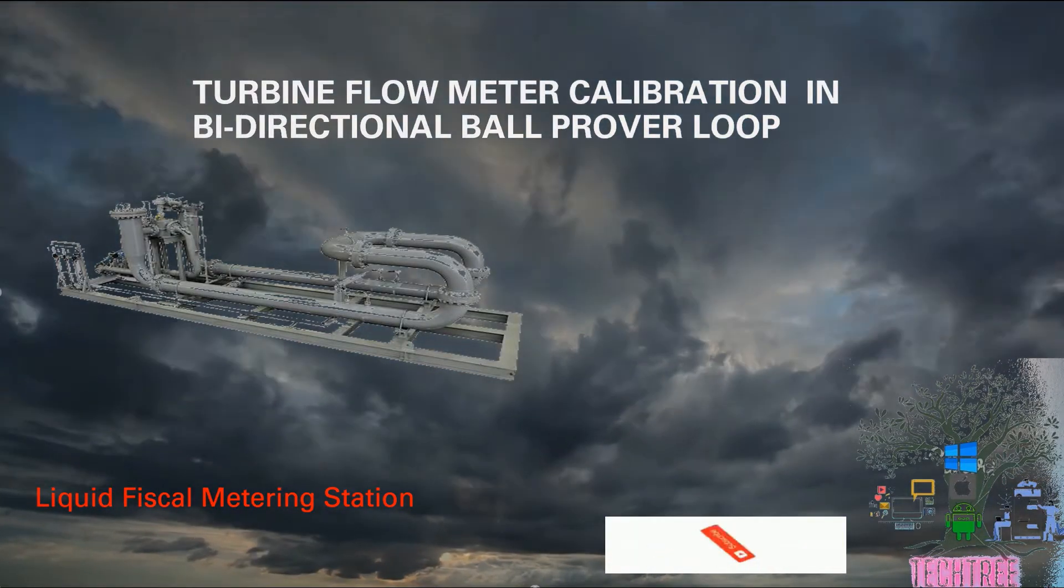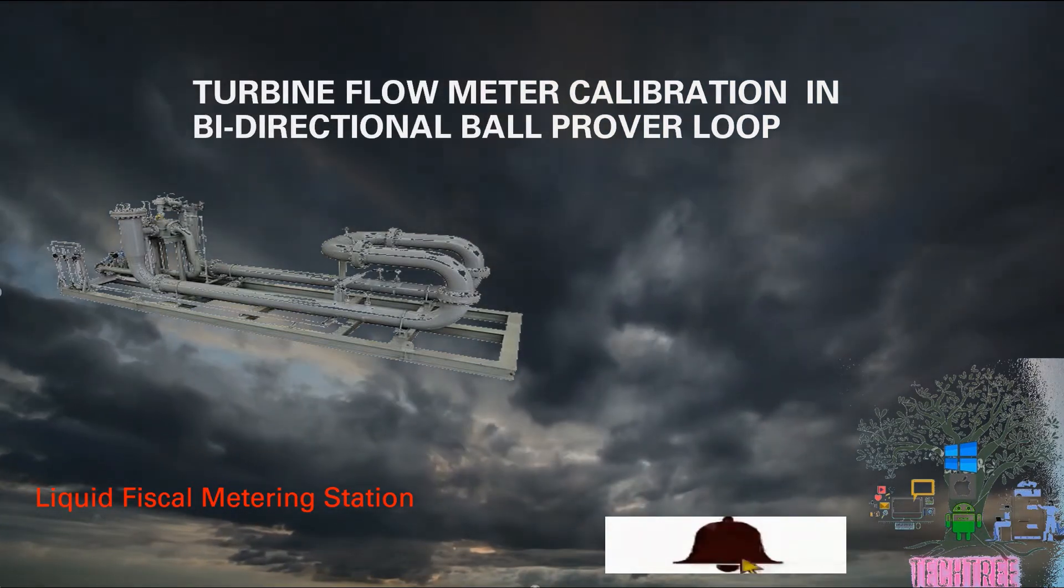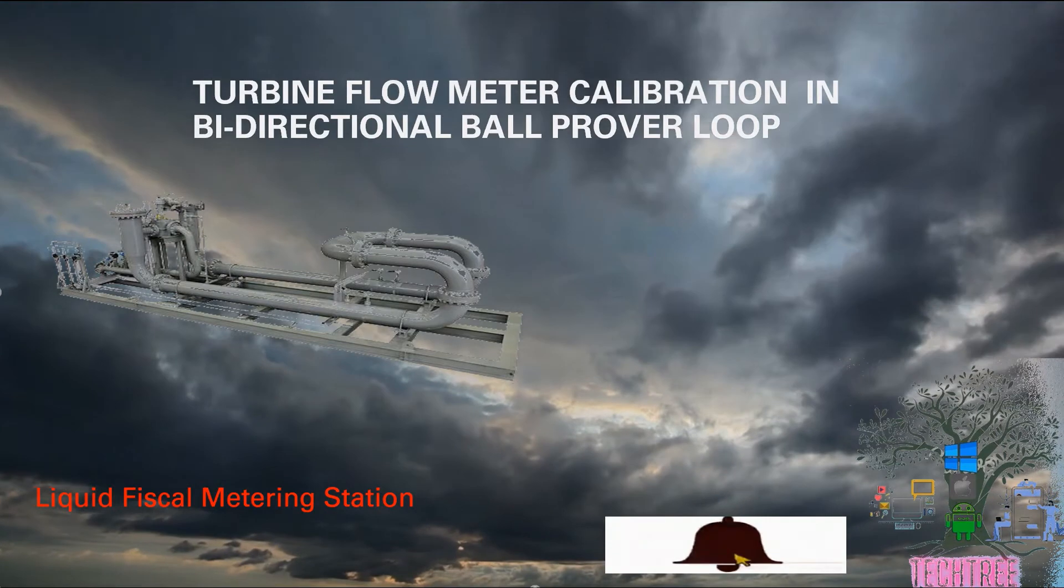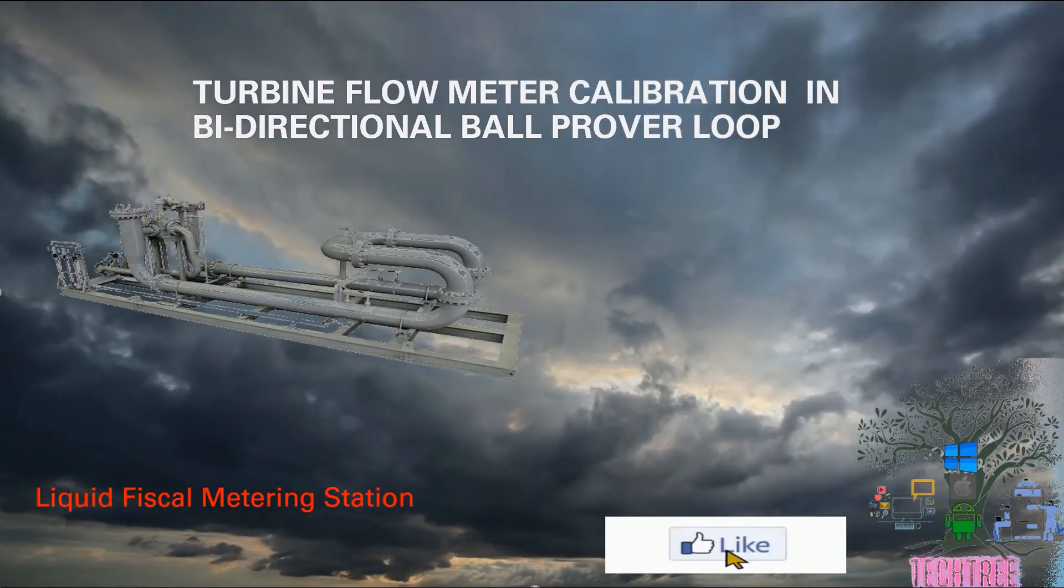Hello friends, welcome to the channel TechTree. My name is Sunde. Today we are going to see how we will do calibration of turbine flow meter of a fiscal metering station by using a bi-directional prover loop.